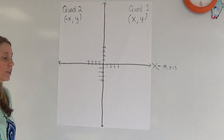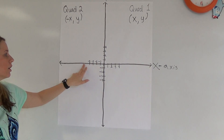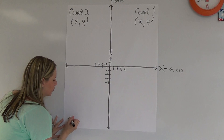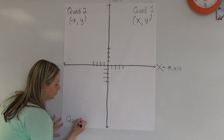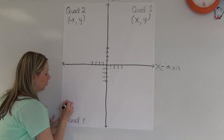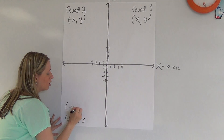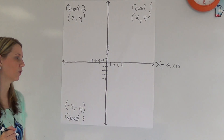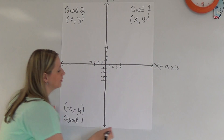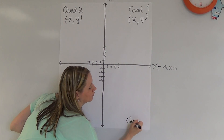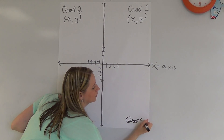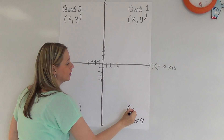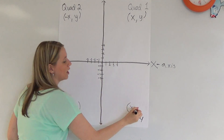Down here, we have quadrant 3, and if you notice, there's a pattern. Now our x is negative, but also our y. So for quadrant 3, we have a negative x and also a negative y. And of course, we have our quadrant 4, which is going to be a positive x and this time a negative y.